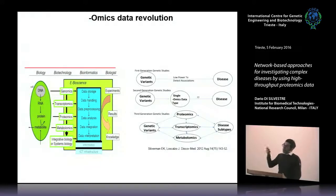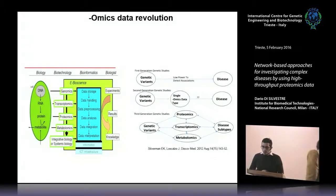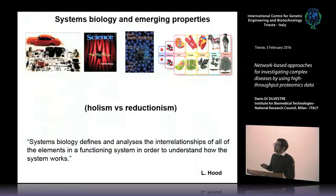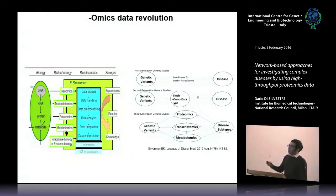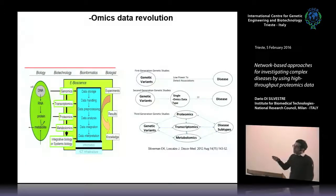Nowadays, different omics technologies are available that allow the production of a large amount of data per experiment. This implies different steps like data storage, handling, pre-processing, analysis, and data integration. Several studies are using this omics data and trying to integrate it for describing biological systems.